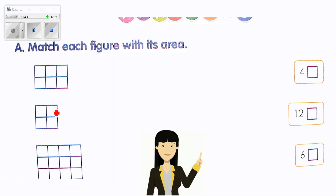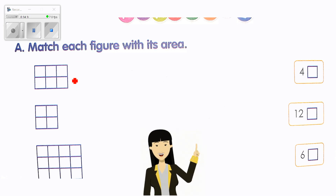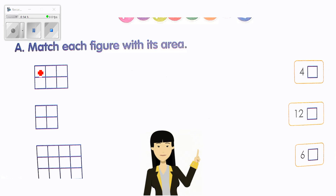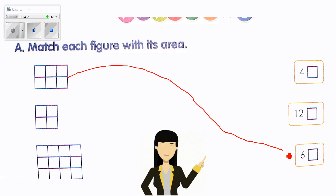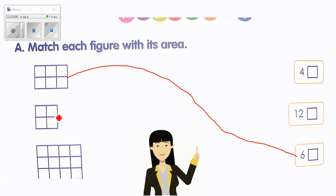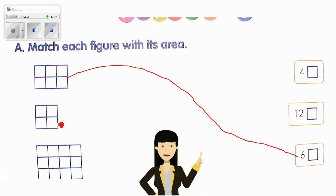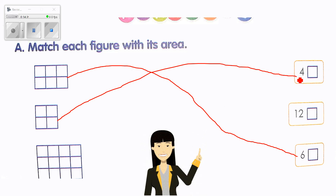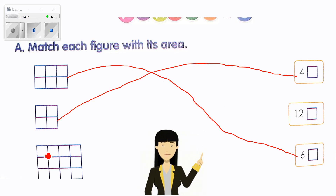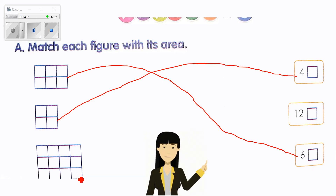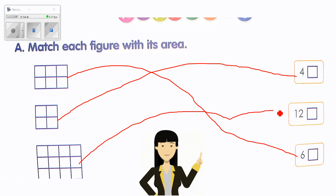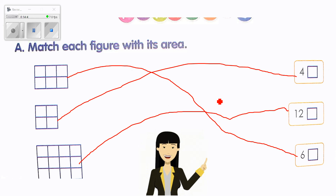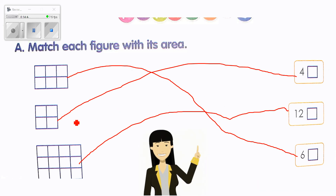Now here you have to match each figure with its area. Count the squares: three plus three — what is the area? Four square units. Here: one, two, three, four by one, two, three — four times three equals 12. You have to revise your multiplication to work faster.